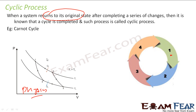In the cyclic process, you start with state one, do some operations, and come back to state one. You start from a state, go through a lot of changes and steps, and return to the same original state.